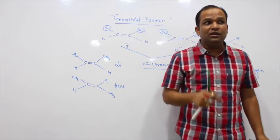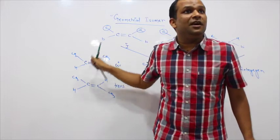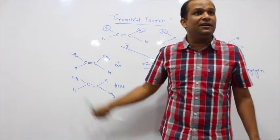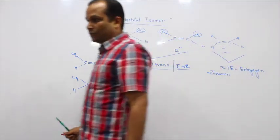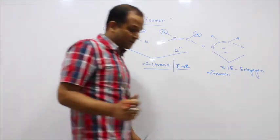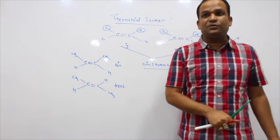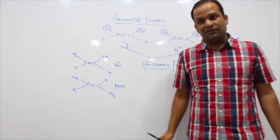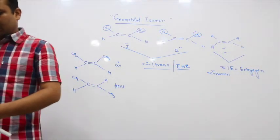Cis and trans forms are easily isolable forms because they have different physical properties. The properties are so different that you can easily isolate them. Both cis and trans forms are isolable.